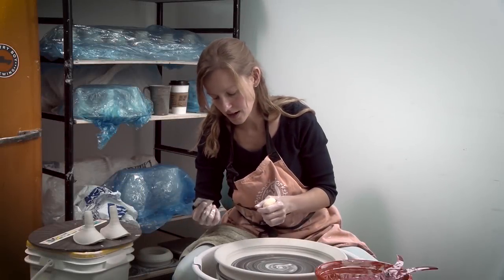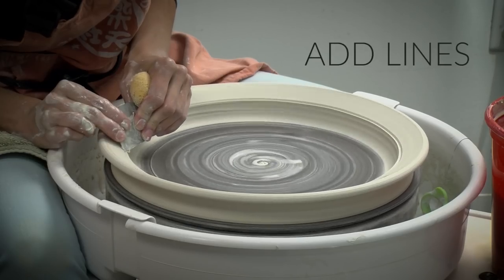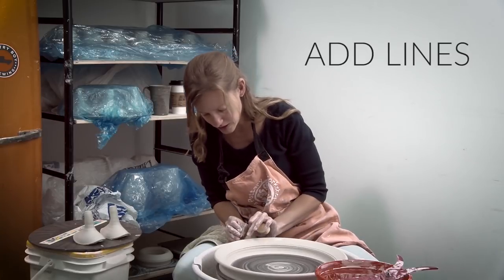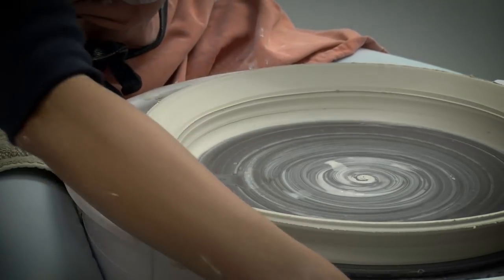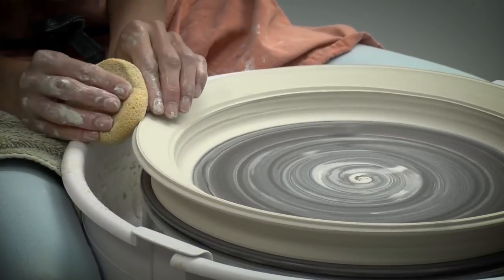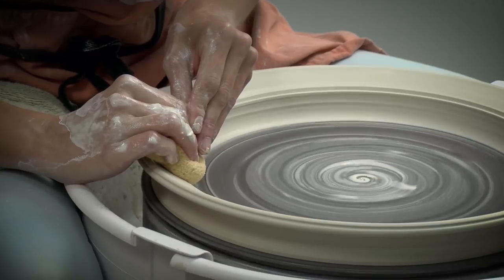We're going to use the cut middle rib to add our line for decoration and then also one on the lip. We always go back in and clean it up with the sponge so there's no jagged edges.